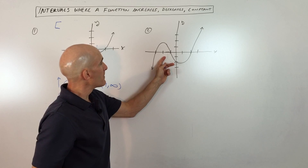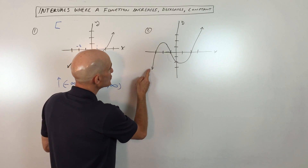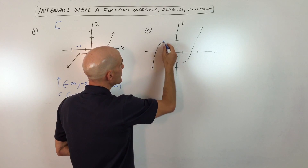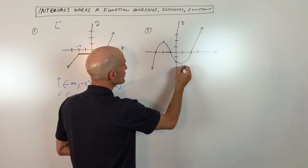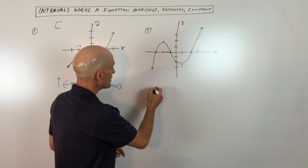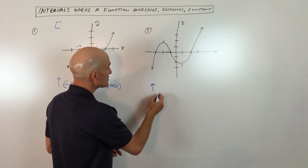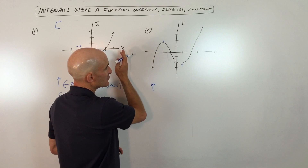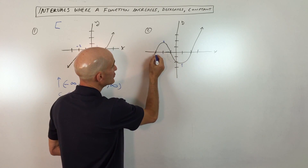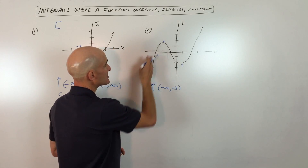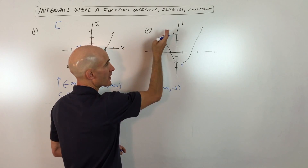Let's look at example number two. We're looking at where it's increasing. You can see it's going up until you reach right about there, then going down until right about there, and then going back up. So let's do increasing first. It's increasing from negative infinity — this is going off to the left — up until x equals negative three. So from negative infinity to negative three, the graph is going up or increasing.